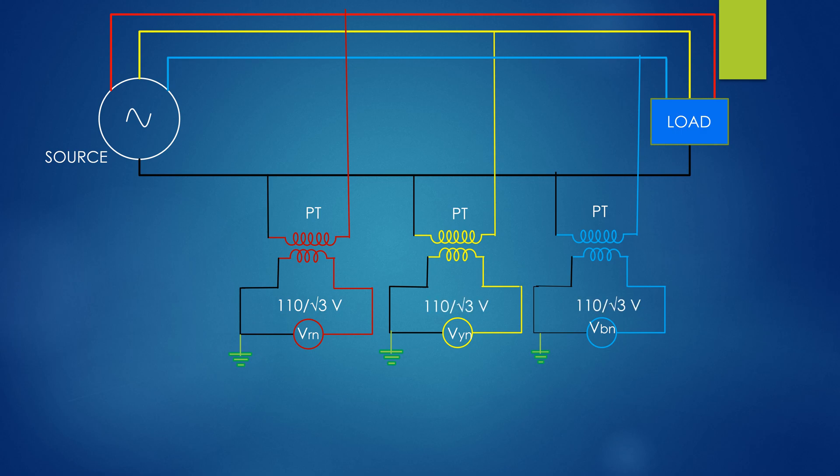Line voltage is 110 volt and phase voltage is 110 divided by root 3 volt. PTR is equal to primary voltage divided by secondary voltage.